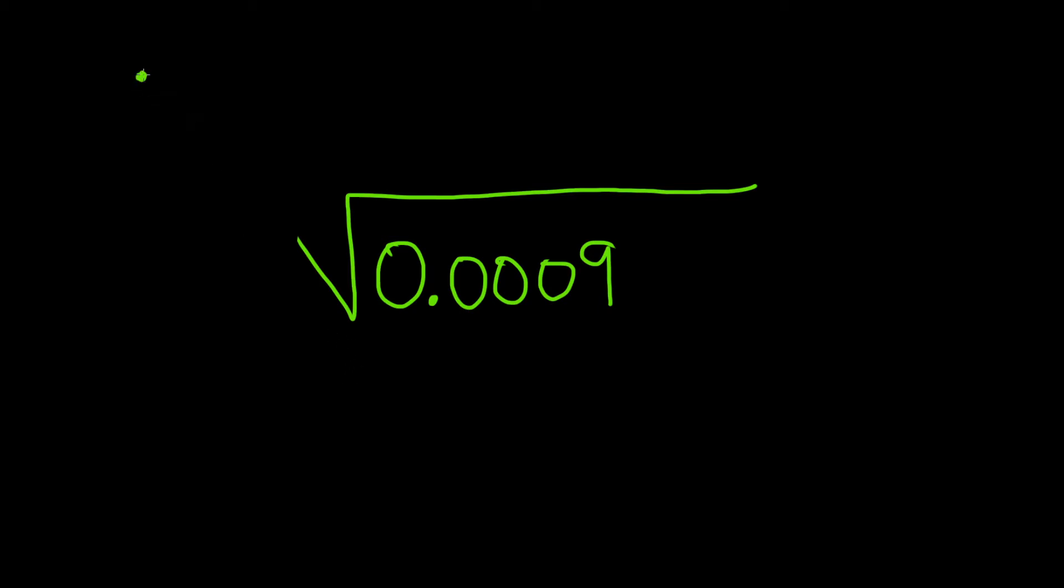So first note, if you have 0.0009, the goal is to write it as a 9 somehow. So we can take this decimal and move it over. So 1, 2, 3, 4.